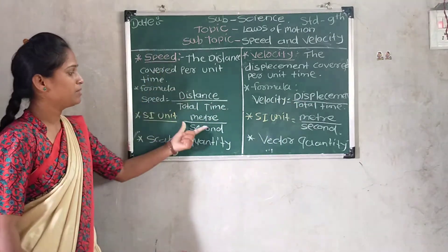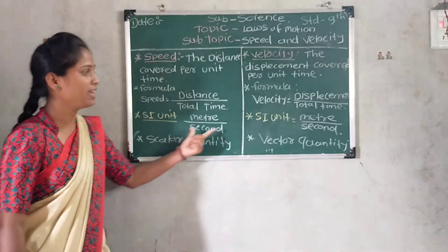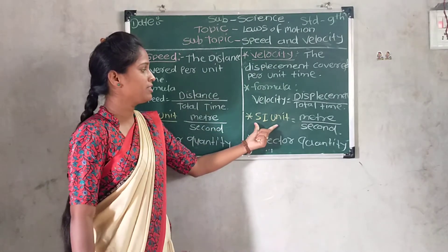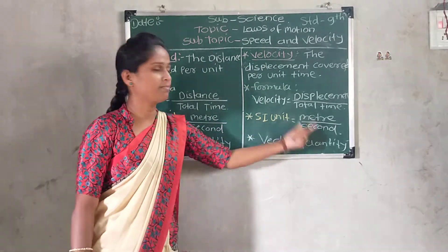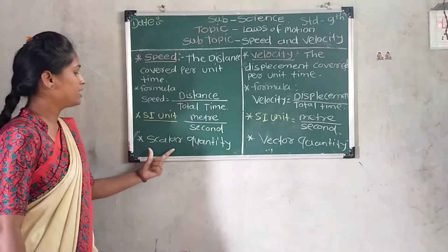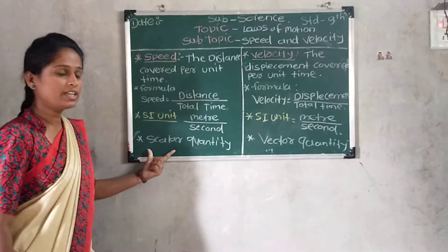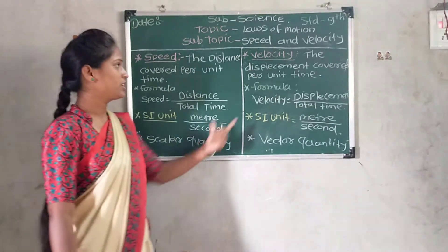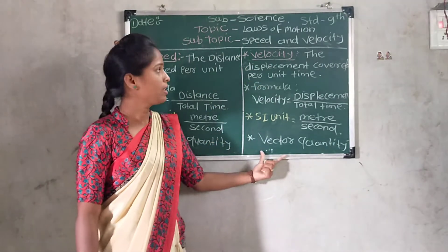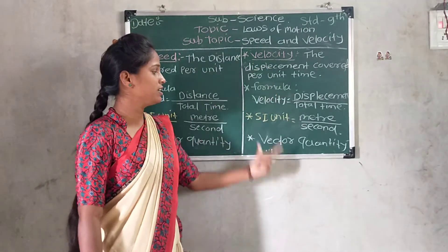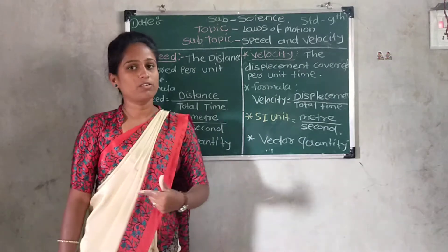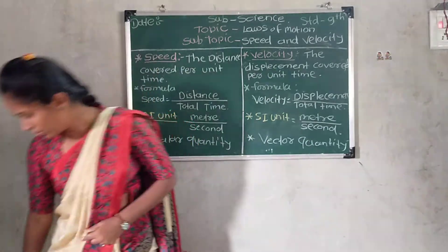The unit of speed and velocity is meter per second. Speed is a scalar quantity. Velocity is a vector quantity.